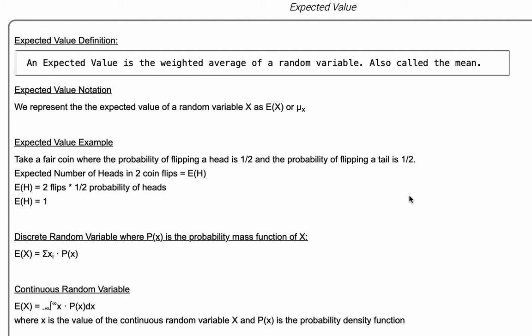Now let's walk through an example to give you some concrete ideas behind expected value. Take a fair coin where the probability of flipping a head is one half and the probability of flipping a tail is one half. The expected number of heads in two coin flips we will write as E(H). What is the expected number of heads that we will get?